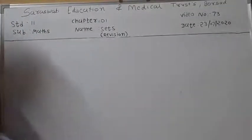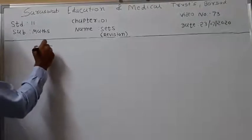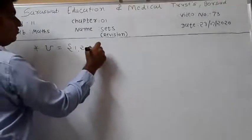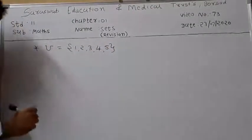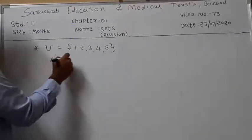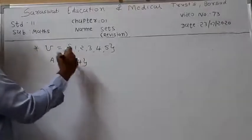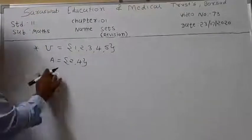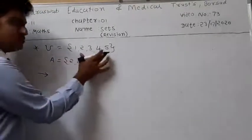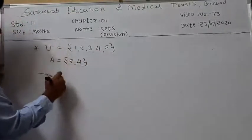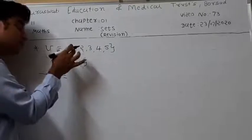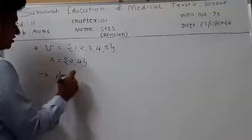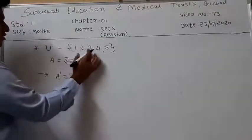Suppose universal set U is equal to the set {1, 2, 3, 4, 5} and set A is equal to {2, 4}. Find the complement of set A. All elements of universal set U which are not present in set A form the complement. So A dash equals {1, 3, 5}. We can also find the complement of complement of set A.